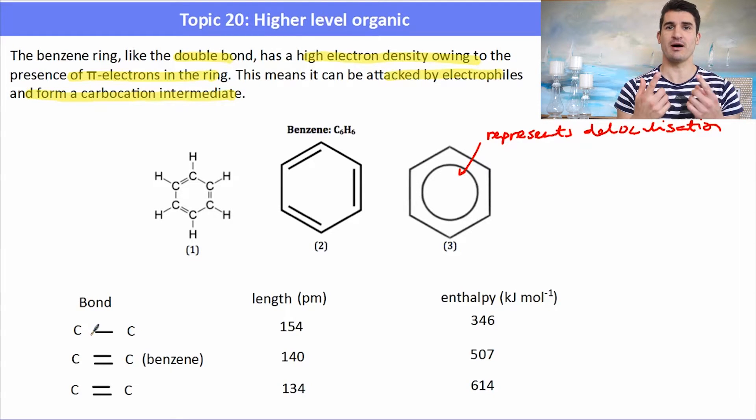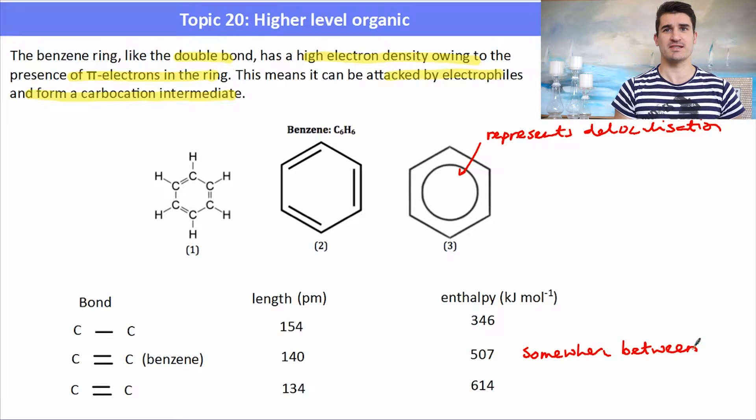Those pi bonds have formed above and below the ring, so the electrons are able to move freely in those regions. A carbon to carbon double bond is stronger than a carbon to carbon bond in benzene, but it is also stronger than a carbon to carbon single bond. The bond enthalpy of a C=C in benzene lies somewhere in between. That means it's got a resonance structure which describes how those electrons can move around in that ring.